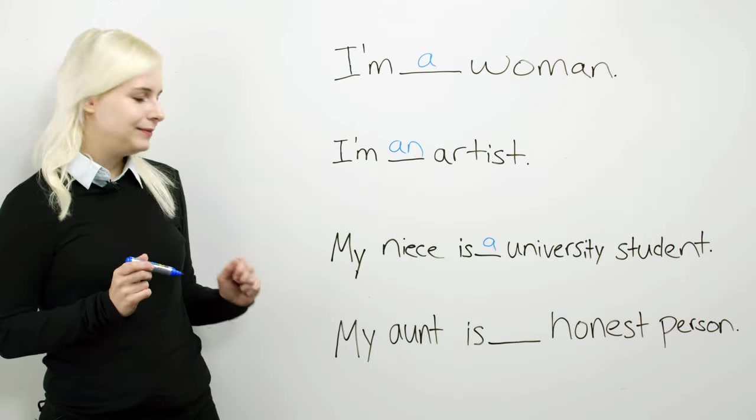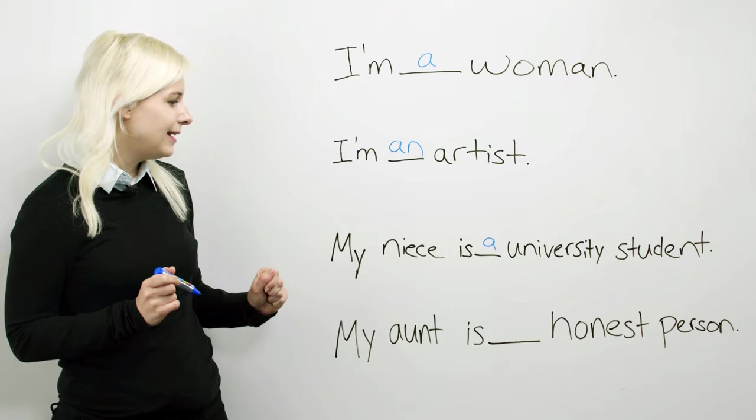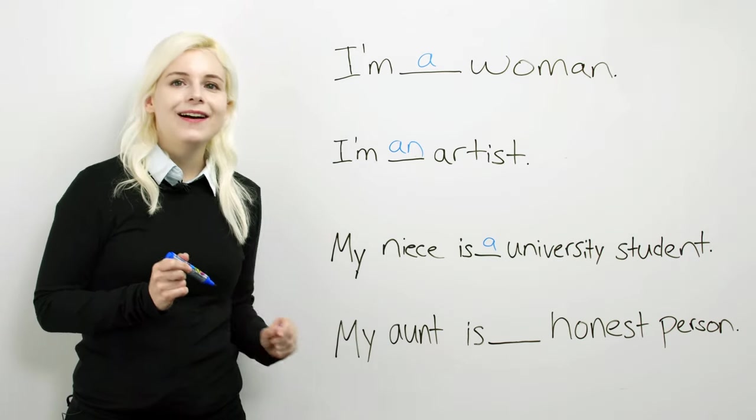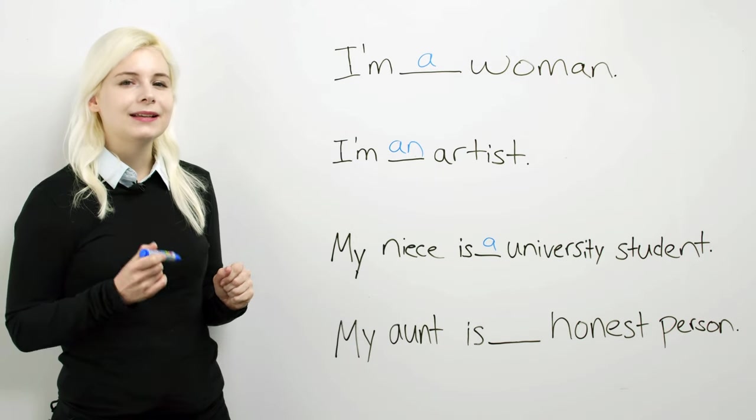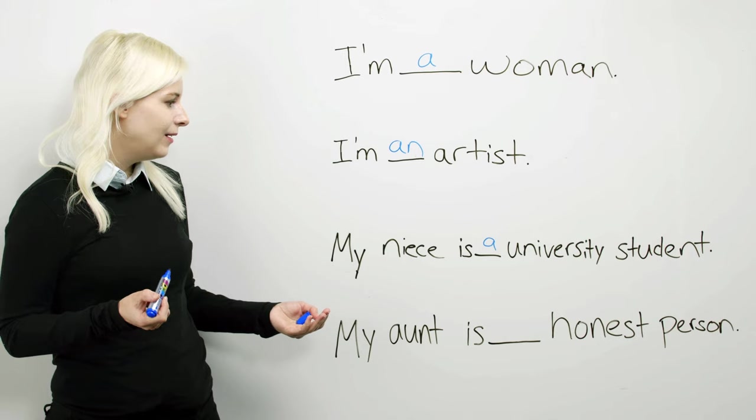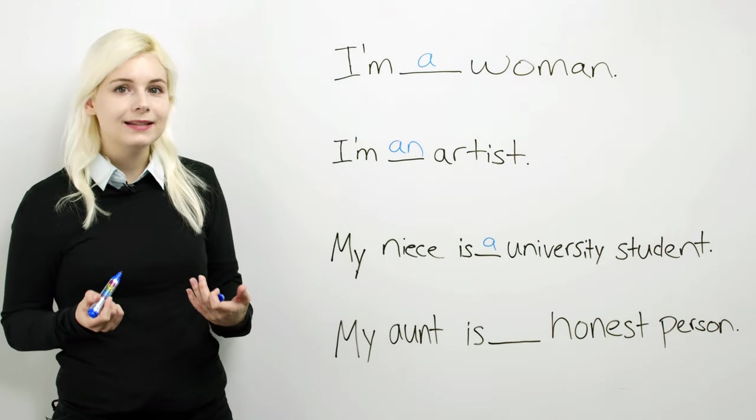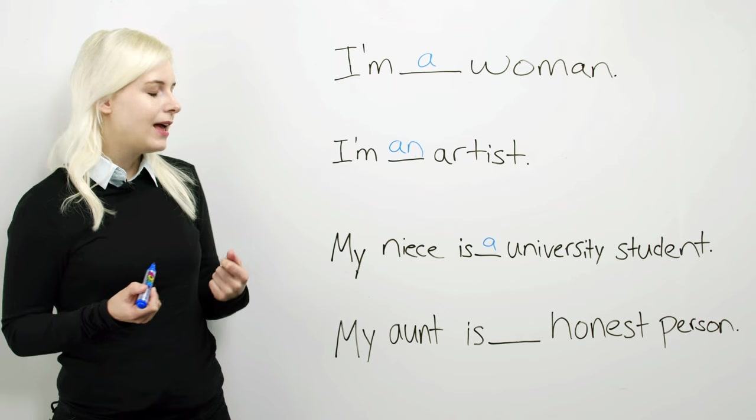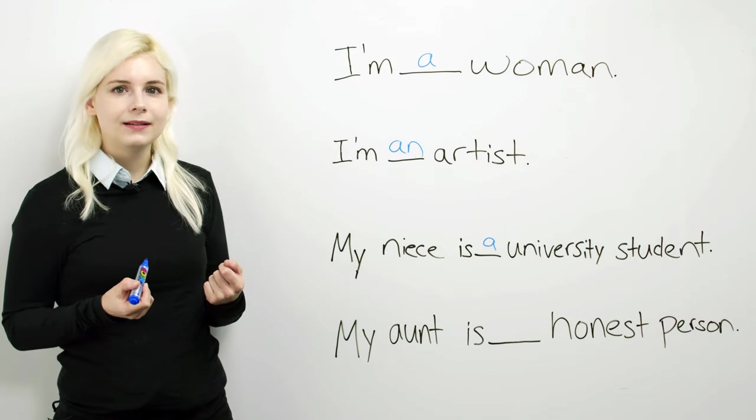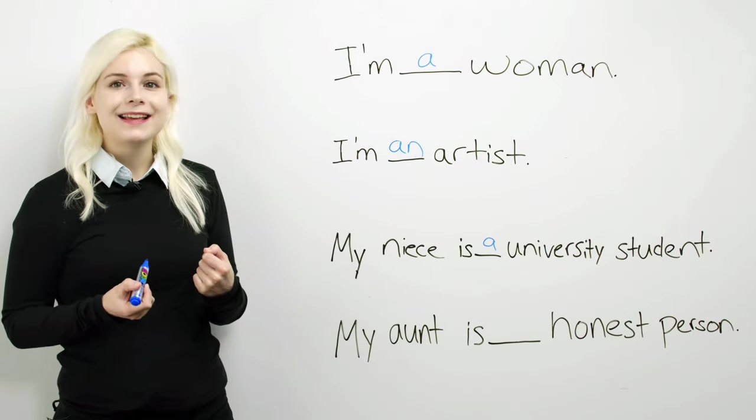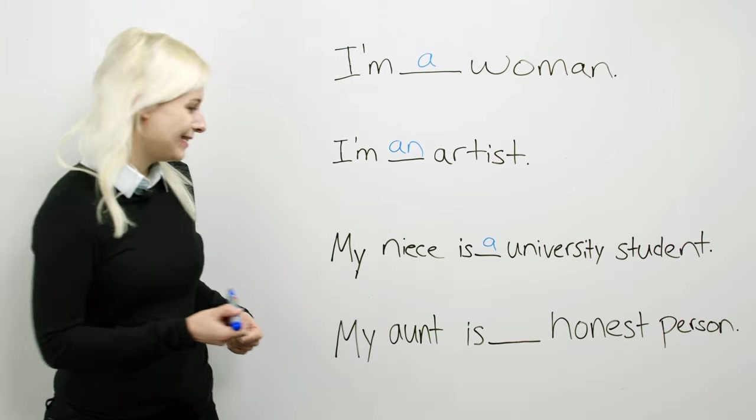Last question. My aunt is blank honest person. Is it a or an? Well, honest has an H, right? It starts with the consonant H and it's pronounced honest. My aunt is an honest person.